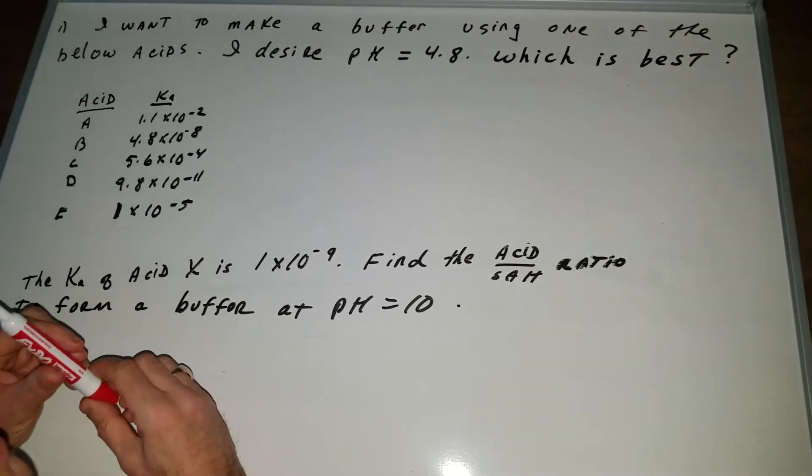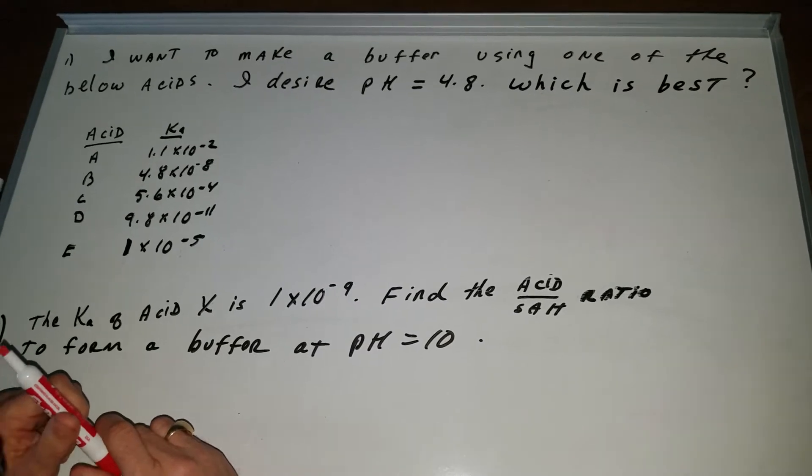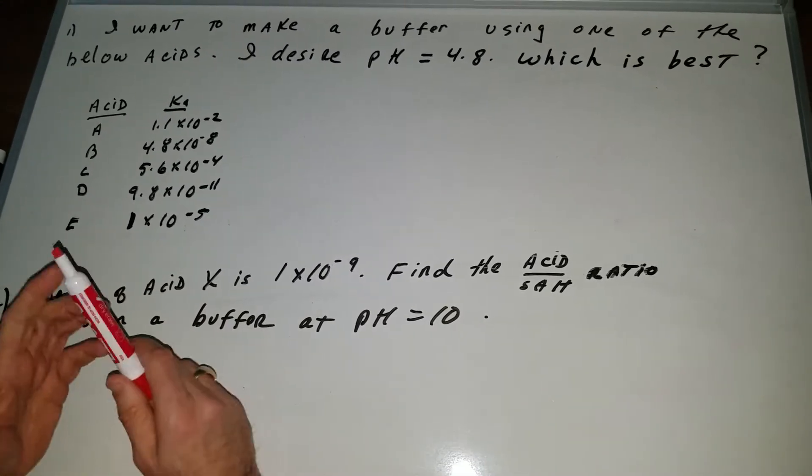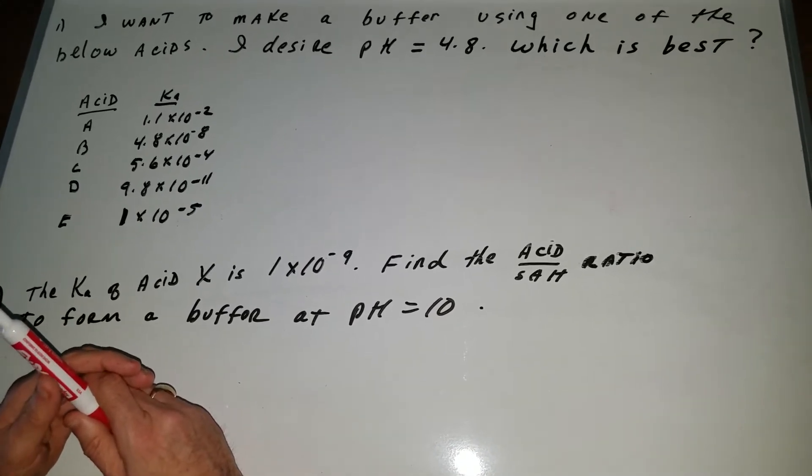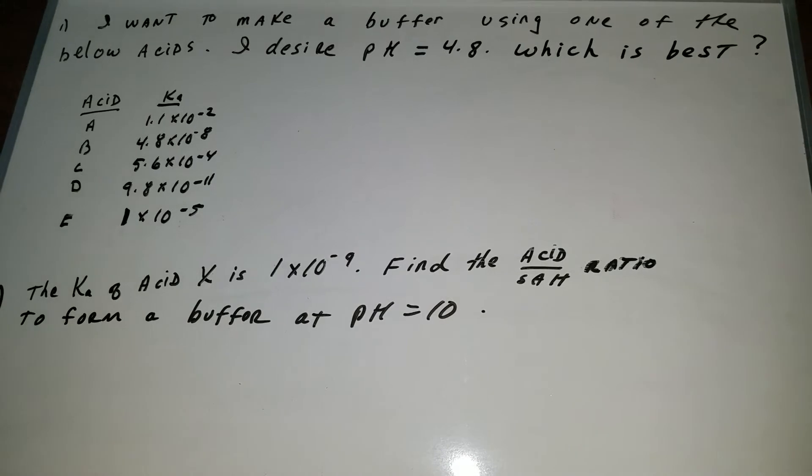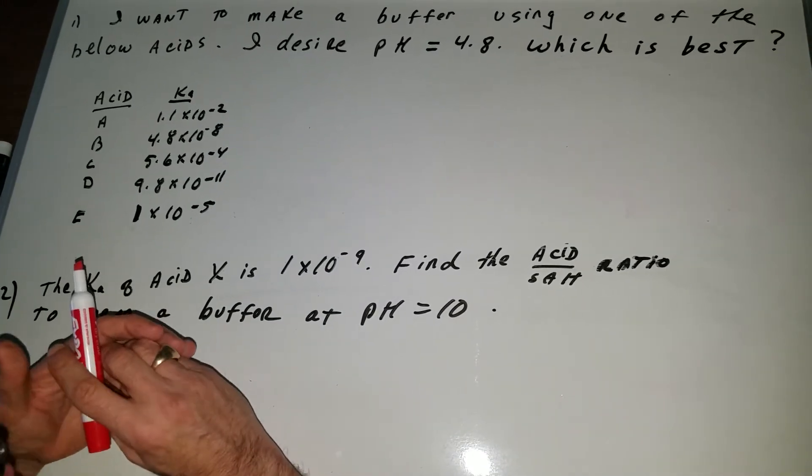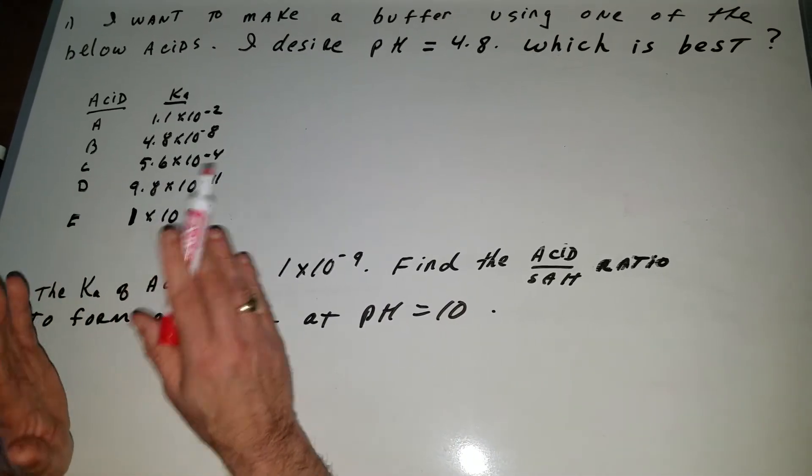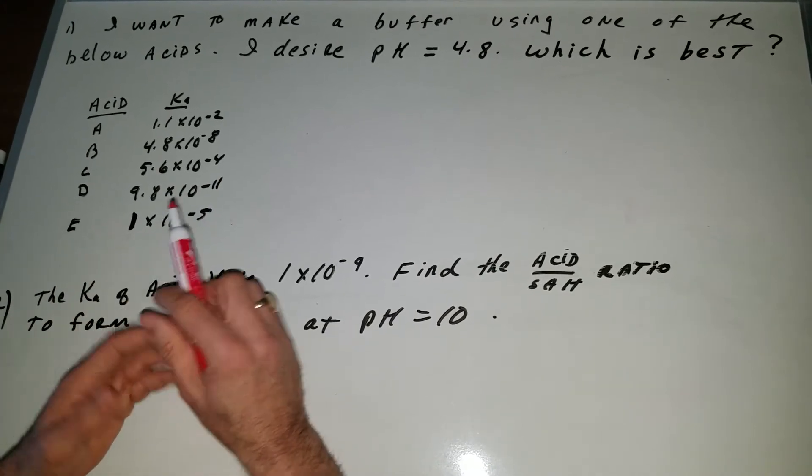Let's look at a problem on buffers that I designed that is very indicative of what they're going to see on the DAT. It says I want to make a buffer using one of the following acids and I desire a pH of 4.8, which one of these acids A through E is best? Now first of all, a buffer solution is a solution in which the pH is not going to change when you add small amounts of acid or base to it.